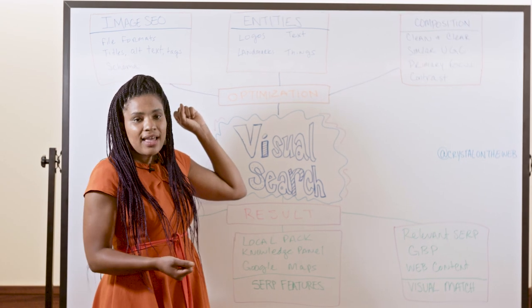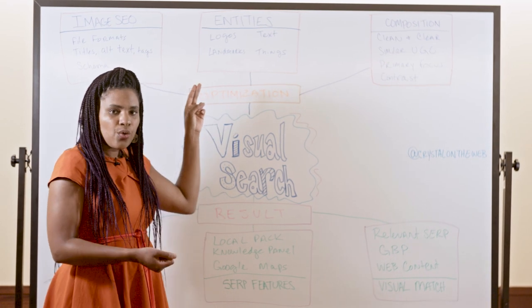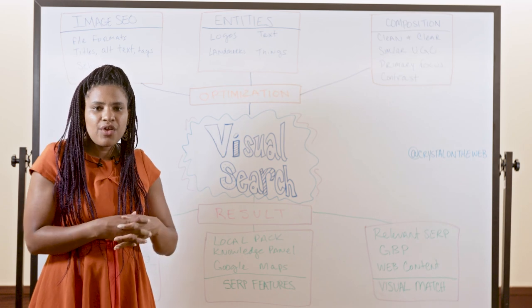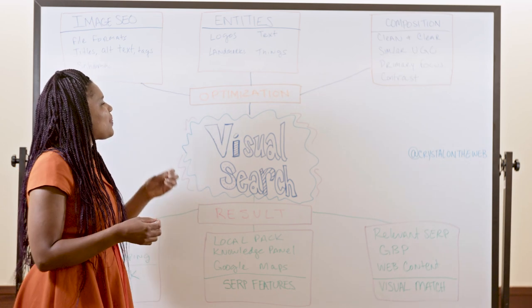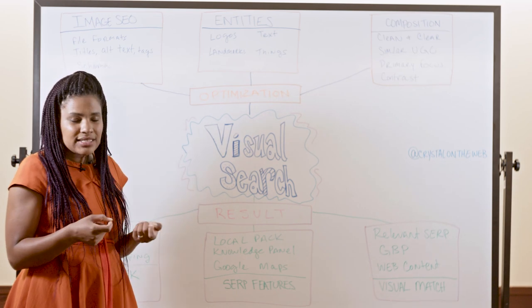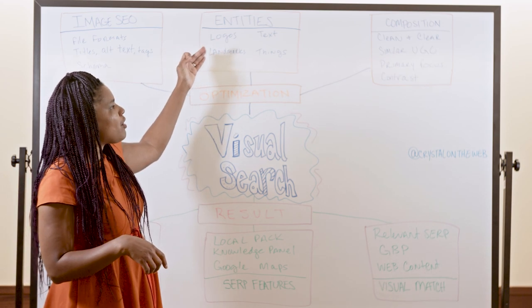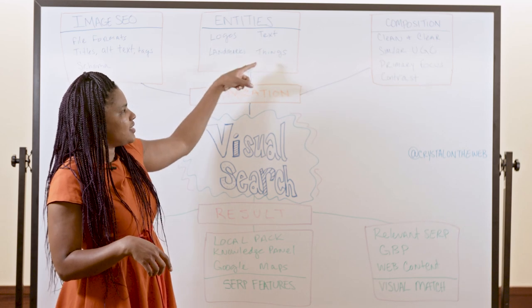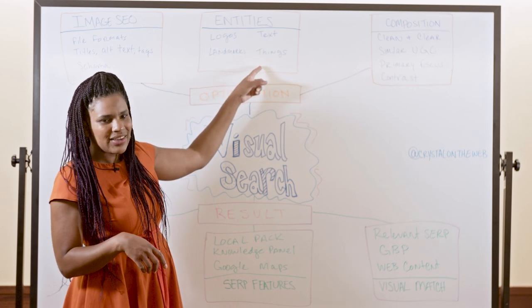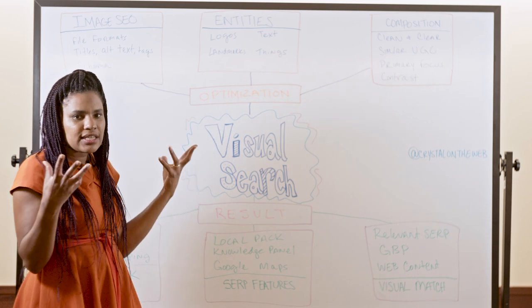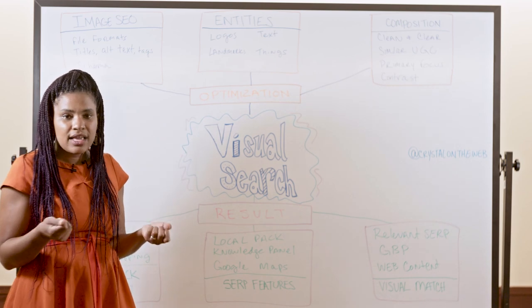Also you're going to think about the kinds of entities which are within your photos. So Visual Search recognition software and tools, they can understand lots of different kinds of entities. There are a few that they prioritize in particular though, and they include logos, landmarks, text, and entities, which I've called things in this particular instance, just as a shorthand. But entities are essentially things that are found within the knowledge graph.